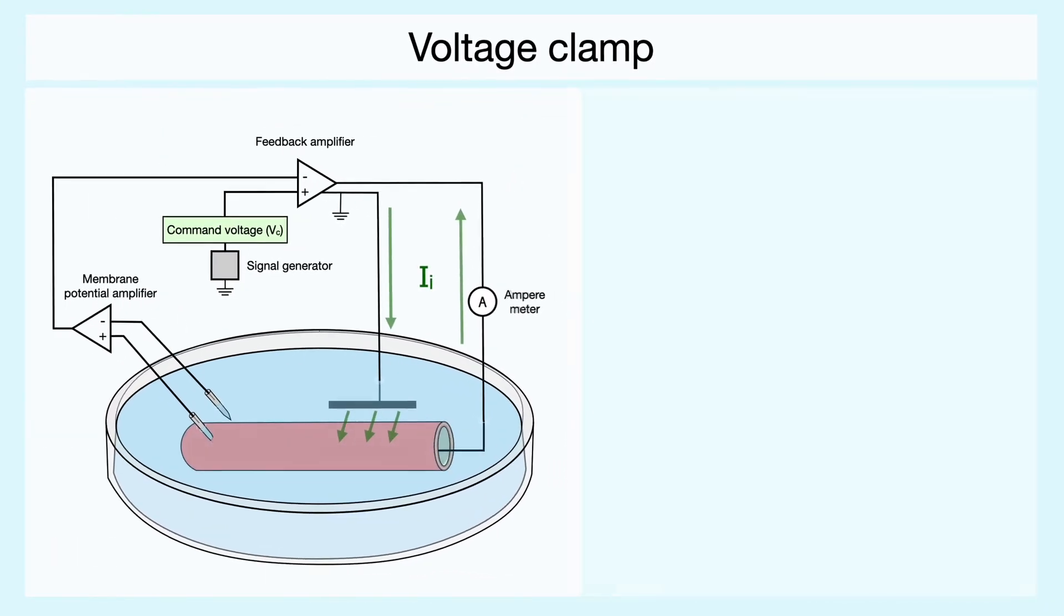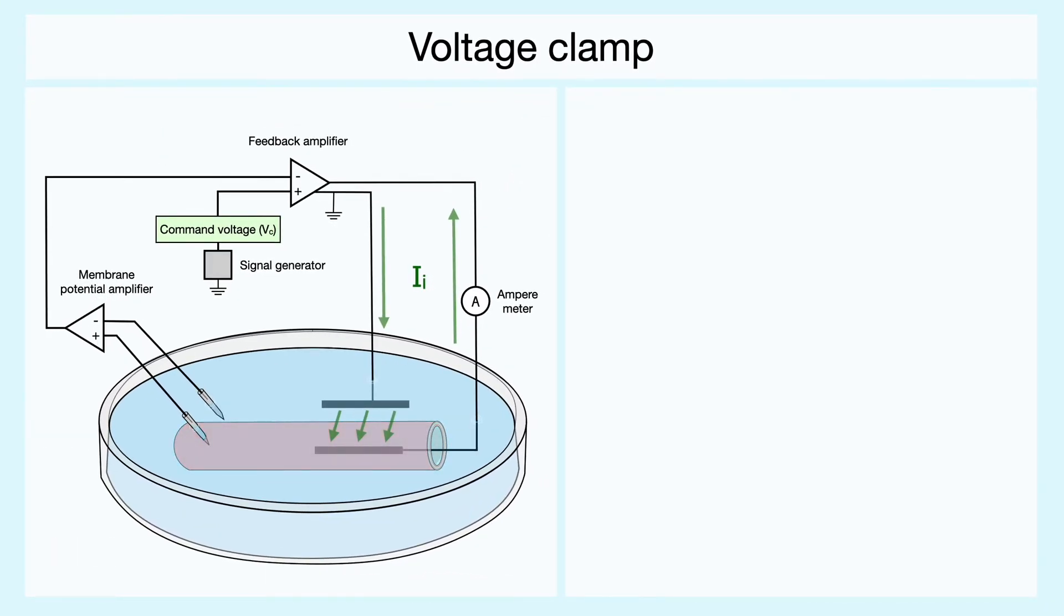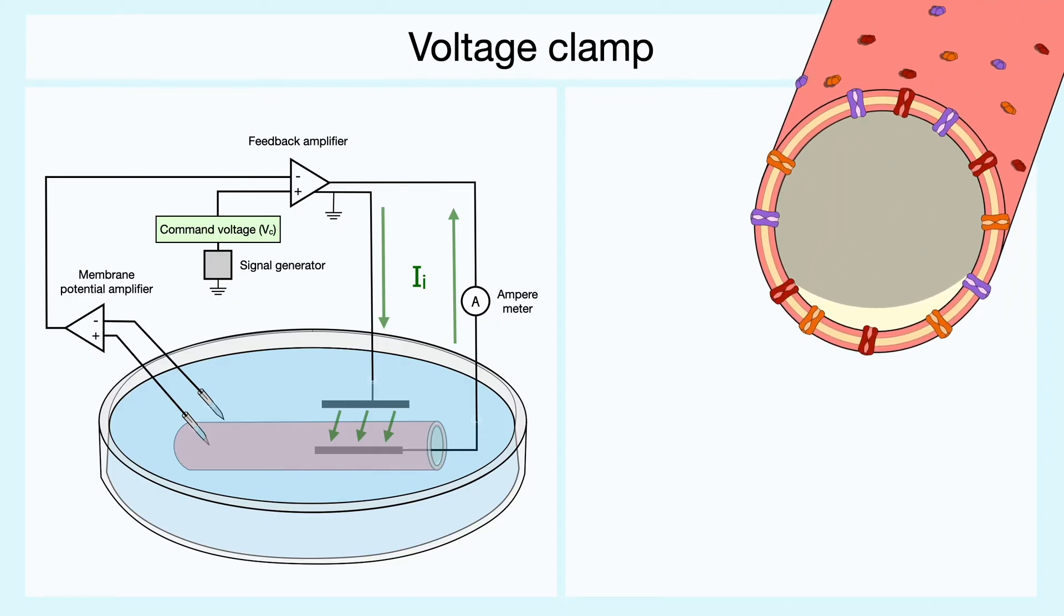Now, before we examine more thoroughly the different results obtained from the voltage clamp experiment, I want to give you a reminder that the axon is composed out of three main types of channels. There are voltage-gated potassium and sodium channels, as well as leak channels that are always open at rest. These three categories of channels will be of interest for us in this section.